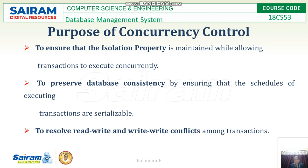What is the purpose of concurrency control? The first purpose is to ensure that the isolation property is maintained while allowing transactions to execute concurrently. The next purpose is to preserve database consistency by ensuring the schedules of executing transactions are serializable, and to resolve read-write and write-write conflicts among transactions.